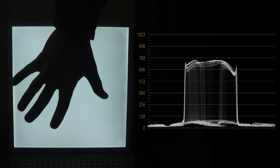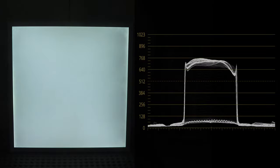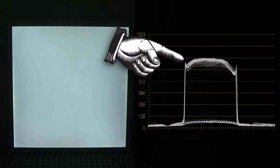This locked-off shot of a light panel looks fairly static, but the waveform monitor reveals a steady cyclic change in brightness.